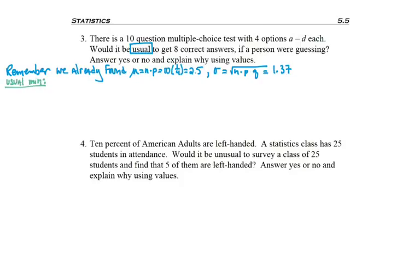The formula for the usual minimum is μ minus 2σ. So we take our μ of 2.5 and subtract 2 times our standard deviation of 1.37, giving us a usual minimum of -0.24.